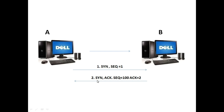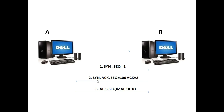Once host A receives the information from host B, it will reply back to host B with an Acknowledge bit, in response to the SYN bit that host B generated. The sequence number is 100 and host A replies back with Acknowledge bit 101. It also sends sequence bit number 2, meaning: I got the information, I am ready to hear if you are willing to send any other information.